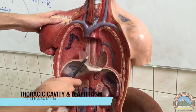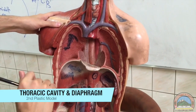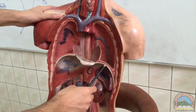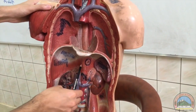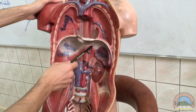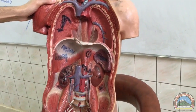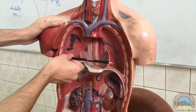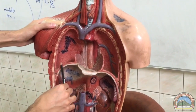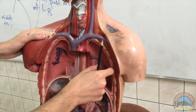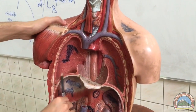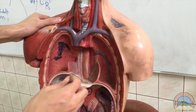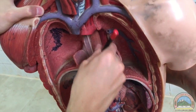Now talking about the thorax on the second plastic model. This is the thoracic cavity and this is the abdominal cavity, separated by the diaphragm. The diaphragm is a very large muscle — it has peripheral muscular parts and a central tendinous part. This is the right dome and the left dome of the diaphragm. The right dome is a little bit higher because of the presence of the liver, and the diaphragm supports the right and left lungs and also the heart.